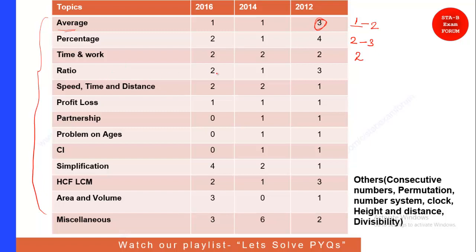For Ratio, you can expect two questions. Speed, Time and Distance — again two questions. Profit and Loss — we have seen one question in each of the years so you can expect at least one question. In Partnership, although it can be covered under Percentage or Profit and Loss, you can expect one question. In 2016 they did not ask a single question on it. Then there is Problems on Ages.